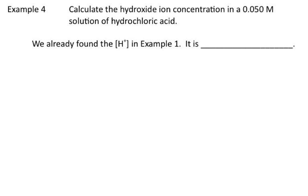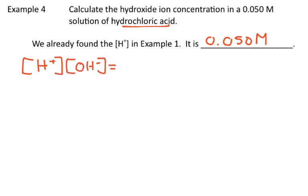To do that, since we're dealing with an acid, we can find, or we did find, the concentration of H+. It was 0.050 molar. So if we take the Kw equation, concentration H+ times concentration OH- equals 1.0 times 10 to the minus 14, and we substitute in the value of H+ that we know.